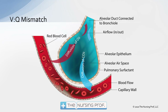Because we're not perfusing the alveolus, we're going to have a VQ mismatch — V stands for ventilation, Q stands for perfusion. If this vessel is occluded by a blood clot, we won't have perfusion past that alveolus. We're still having ventilation — air is going in and out — but there's no perfusion, so gas exchange does not occur in that alveolus. Multiply that across a million alveoli, and we have a big problem with the patient's ability to perfuse.